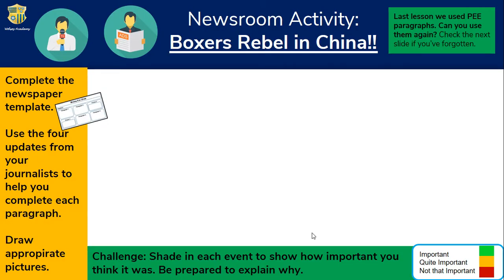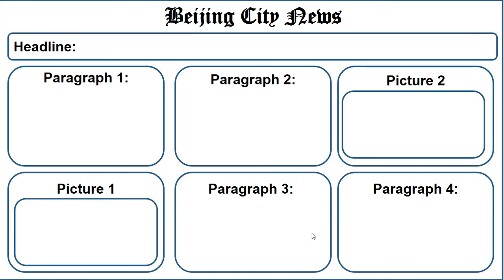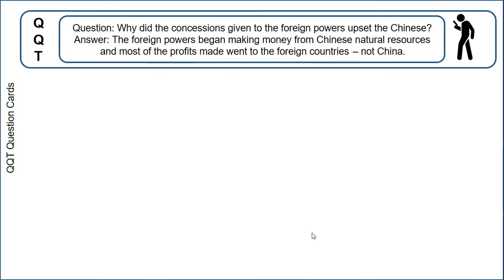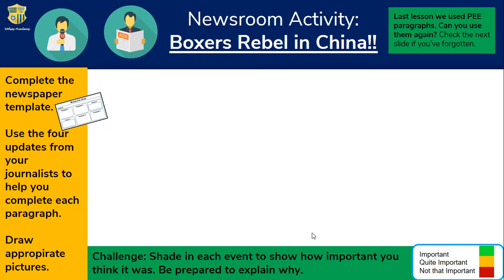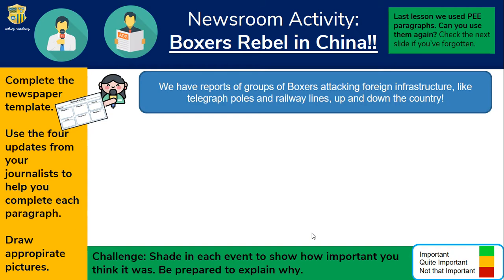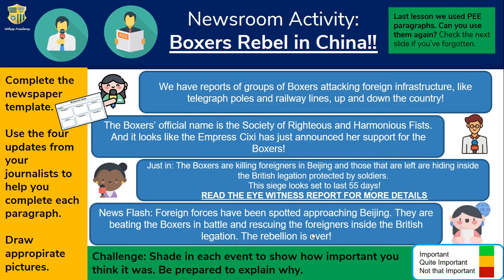Next is the newsroom activity on the Boxer Rebellion itself. To complete this, students use this template — you don't have to use it, but it's quite useful for certain groups. You can get them working in groups, and there are four interjections from newsflashers that you can release at your discretion as they complete those newspaper articles.